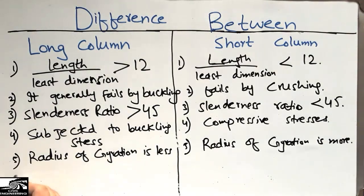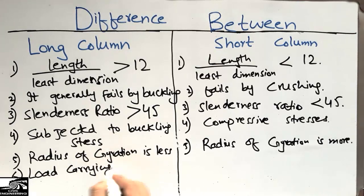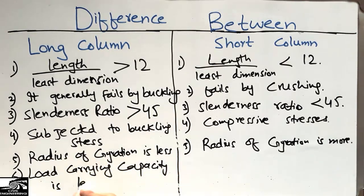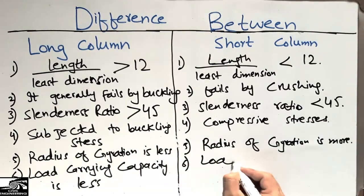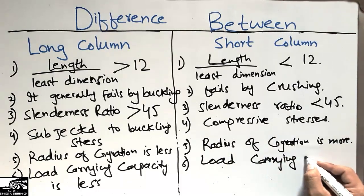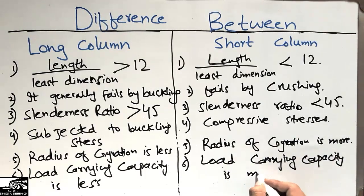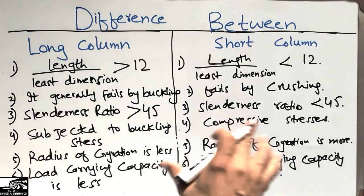The last and final difference is the load carrying capacity. The load carrying capacity of a long column is always less, while the load carrying capacity of a short column is always more. Because short columns fail by compression, they have more capacity to carry higher loads.